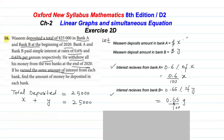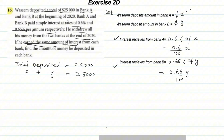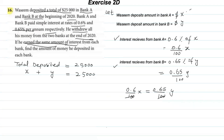The interest from Bank A that Waseem receives is 0.6% of x. Percentage means one over hundred and 'of' means multiply, so this is (0.6/100) × x. Similarly, the interest from Bank B is (0.65/100) × y. Since he earns the same amount from each bank: (0.6/100)x = (0.65/100)y.